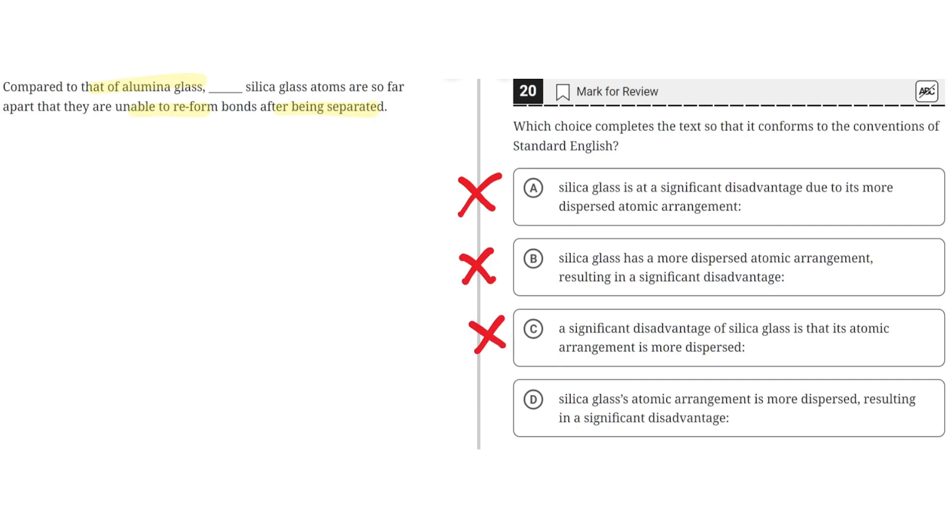D. Silica glass's atomic arrangement is more dispersed resulting in a significant disadvantage. This is correct because it properly compares alumina glass's atomic arrangement to silica glass's atomic arrangement and it clearly establishes that silica glass's atomic arrangement is the noun or subject of the sentence. So D is correct. Thank you.